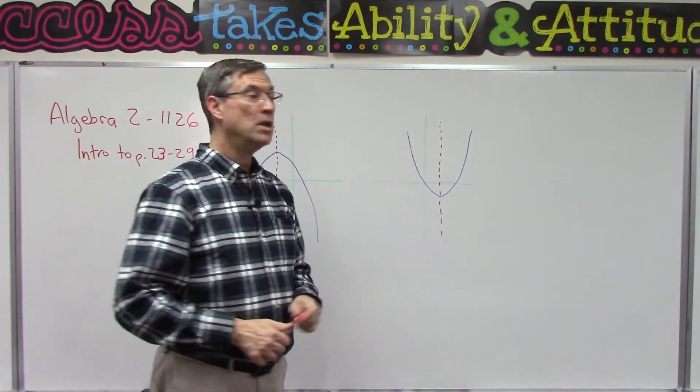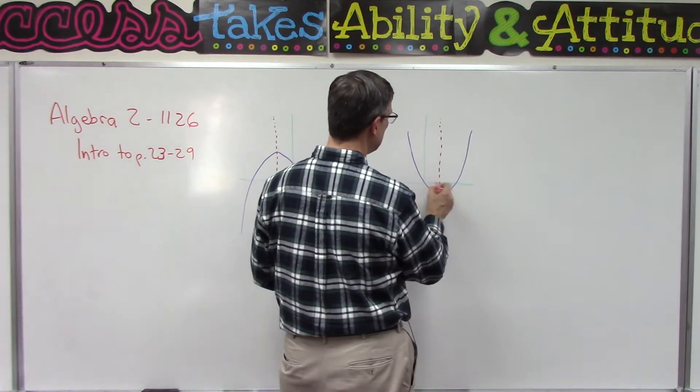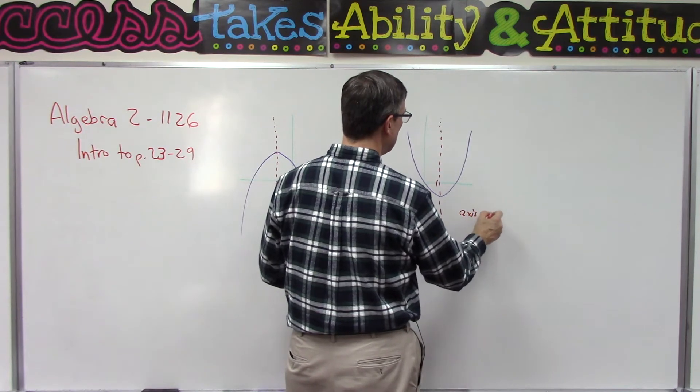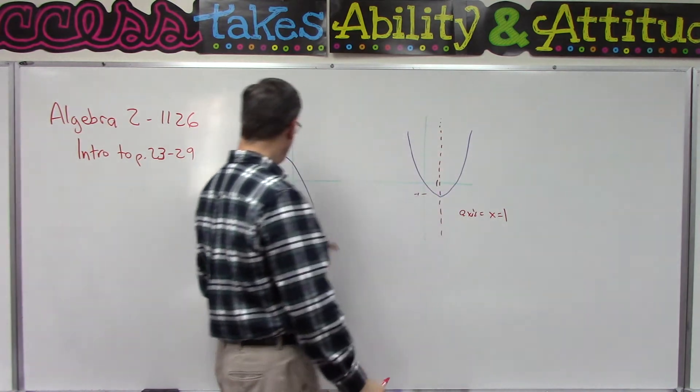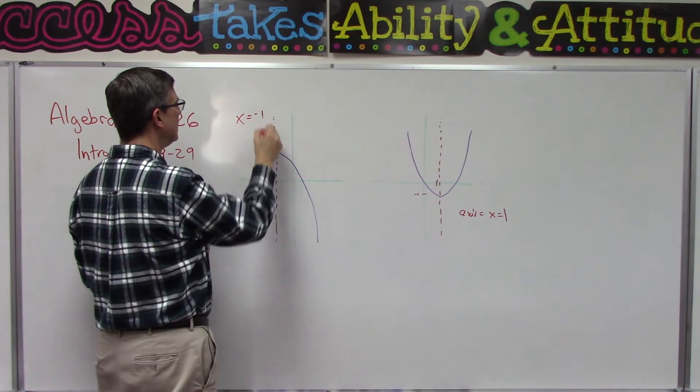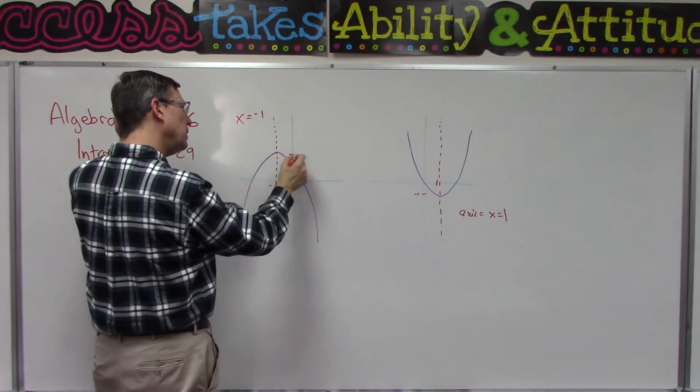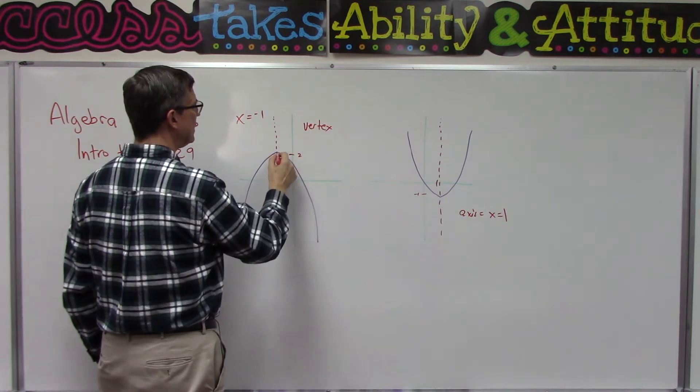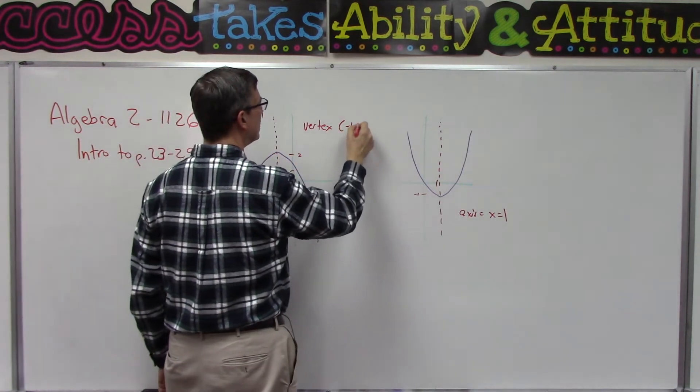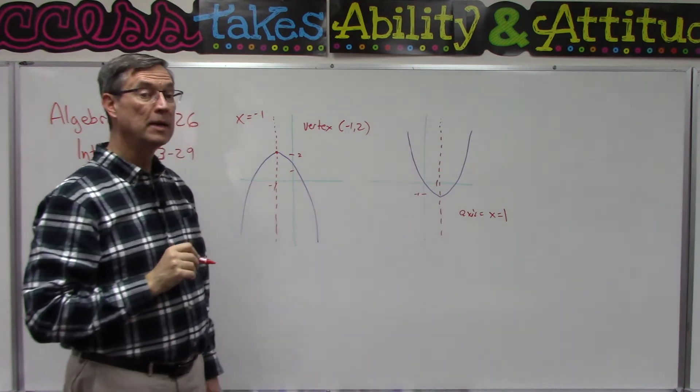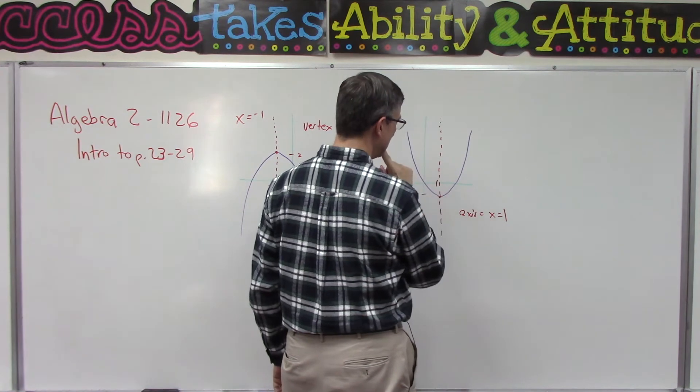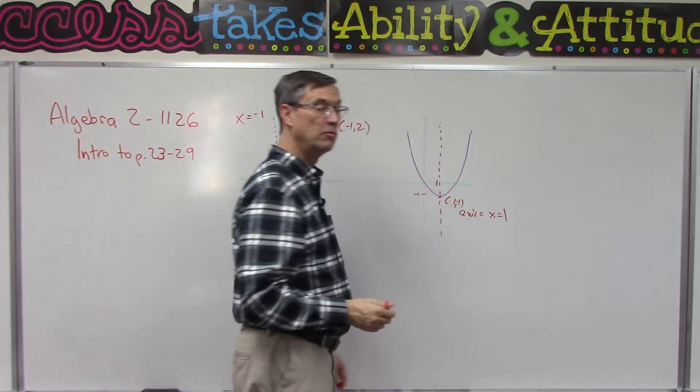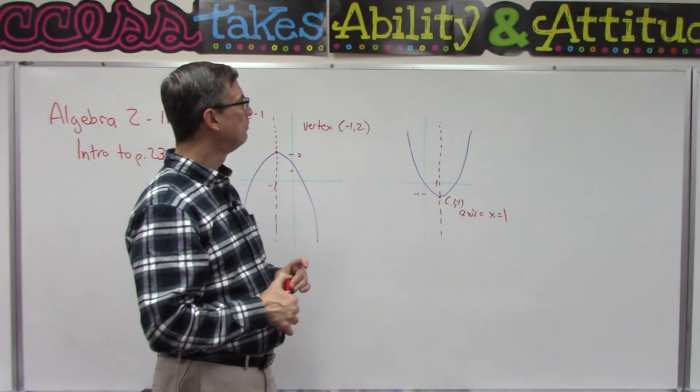Just eyeballing this, it looks like this is one and then down here is negative one, so we would say the axis of symmetry is x equals one. Over here it looks like the axis of symmetry is x equals negative one. This point up here is probably a two, so this is called the vertex. The vertex here would be negative one, positive two—it's the address of the point right here at the peak of that cone. This one we might say is one, negative one for that vertex.